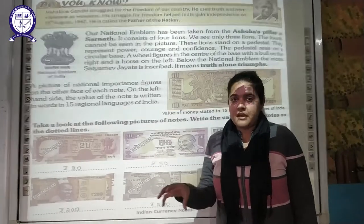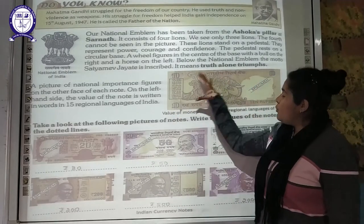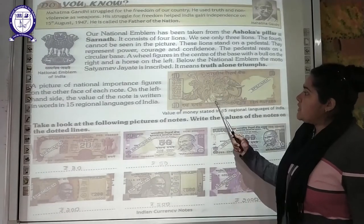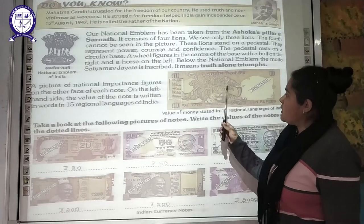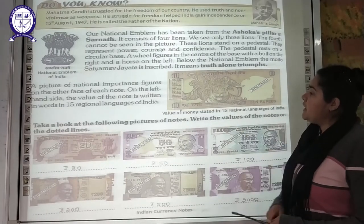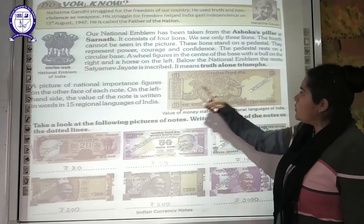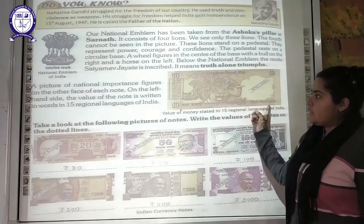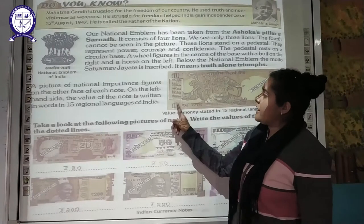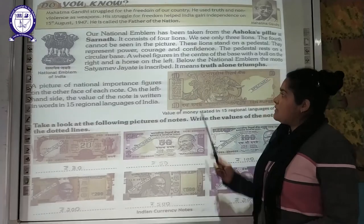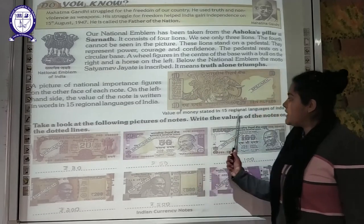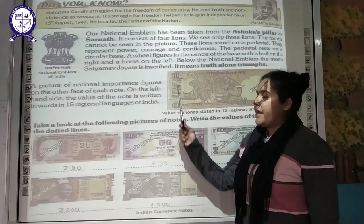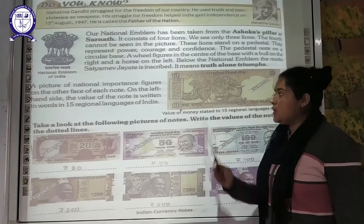Now, on the back face of the 10 rupee note, things of national importance are depicted — like a tiger, a rhino, and an elephant. The value of the currency note is written in both Hindi and English. On the left-hand side, the value is written in 15 regional languages spoken in India.